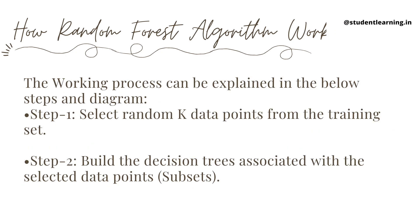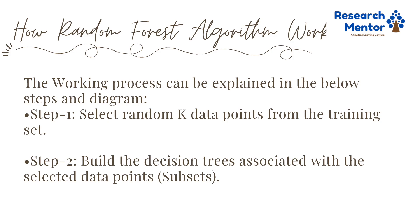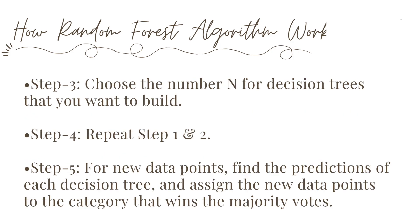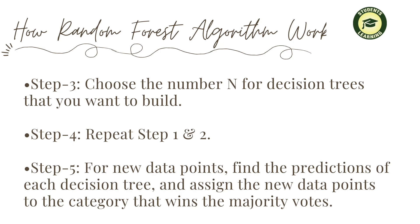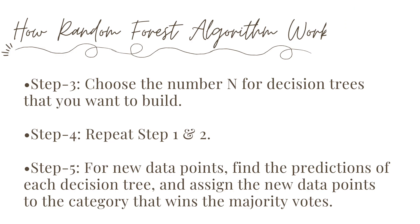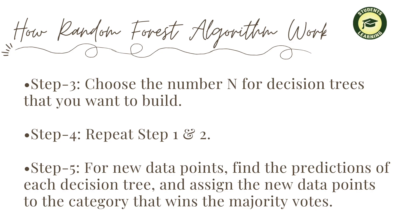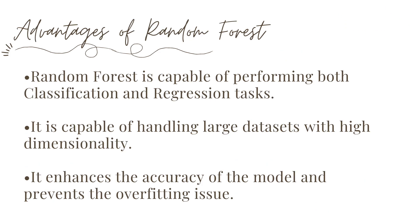How does the random forest algorithm work? It works with five steps. Step one: select random K data points from the training set. Step two: build the decision tree associated with the selected data points or subsets. Step three: choose the number N of decision trees that you want to build. Step four: repeat steps one and two. Step five: for new data points, find the prediction of each decision tree and assign the new data point to the category that wins the majority of votes.